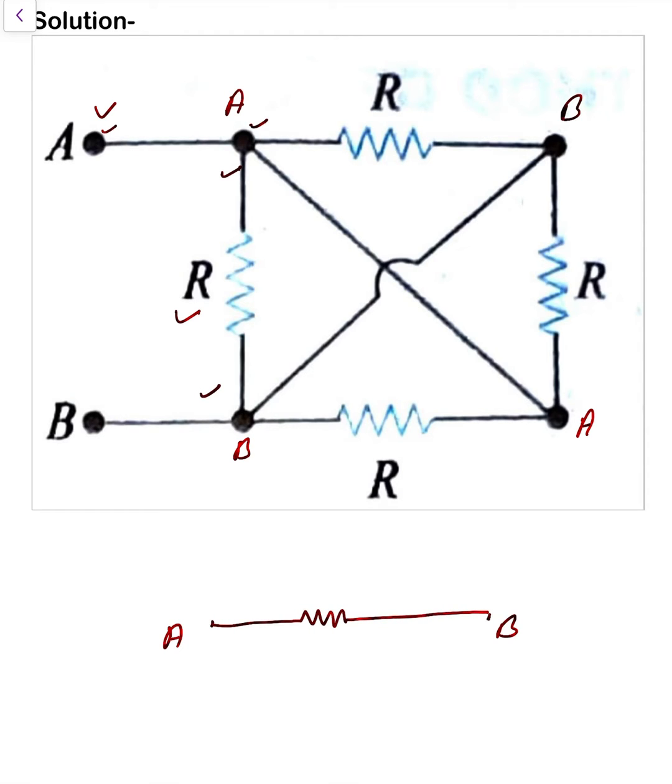After that A here B, so also R connected like that one. This is also R, clear. And here A and here B also R, so like that one. Clear or not? A and to B.